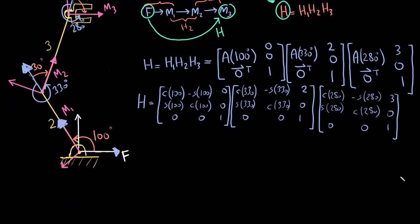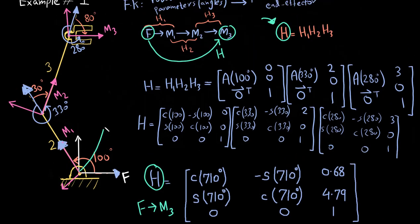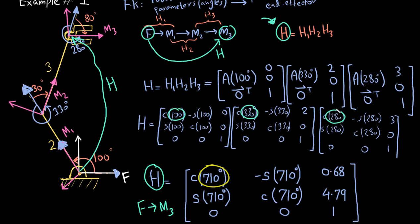This homogeneous transform H = H1 · H2 · H3 is the one that takes the fixed frame and moves it directly to the end effector frame, M3. It takes the fixed frame and puts it directly at the M3 frame in one step — this is my final homogeneous transform. Dissecting the result, the rotation part is simply the sum of 100°, 330°, and 280°, which makes sense since all the rotation matrices are being multiplied out. The remaining term is the displacement.